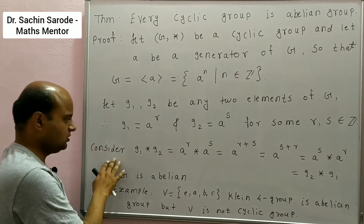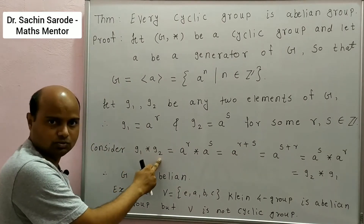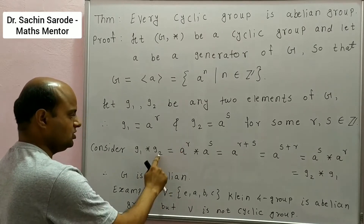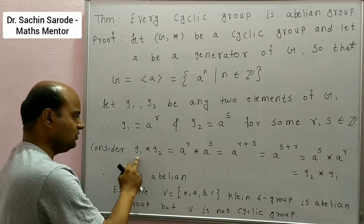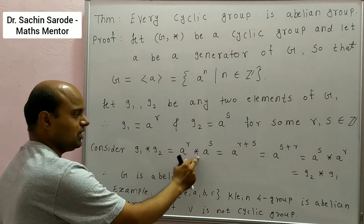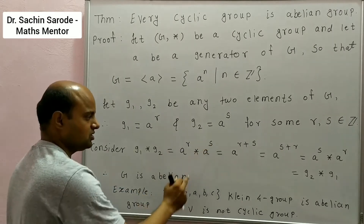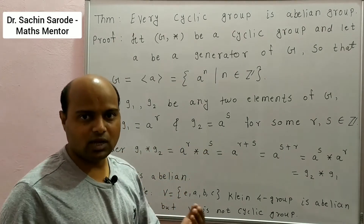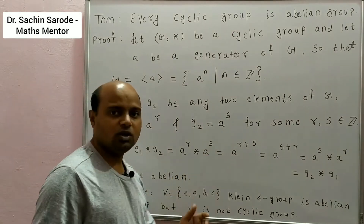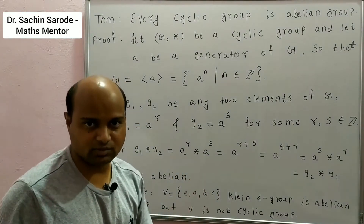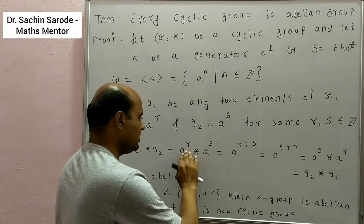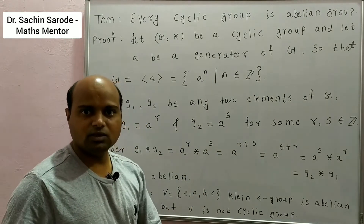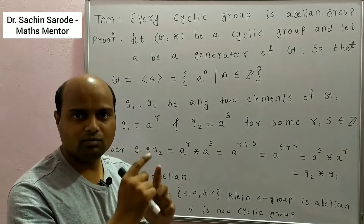Now consider G1 * G2: G1 is A^R and G2 is A^S. Therefore G1 * G2 = A^R * A^S. A^R means A * A, R times. A^S means A * A, S times. Therefore G1 * G2 = A^(R+S).